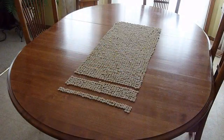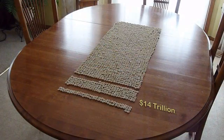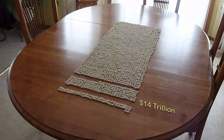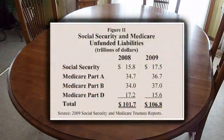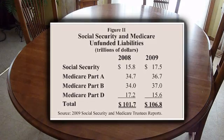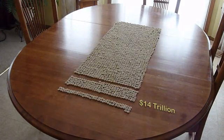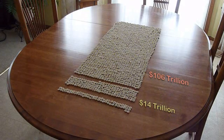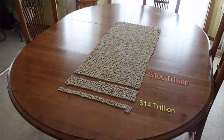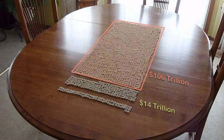On top of the $14 trillion in debt that the United States government is currently in, we also have unfunded liabilities: Social Security, Medicare, and the like. On top of that $14 trillion in debt, we have $106 trillion in unfunded liabilities for Social Security and Medicare. That's the large group of Cheerios.